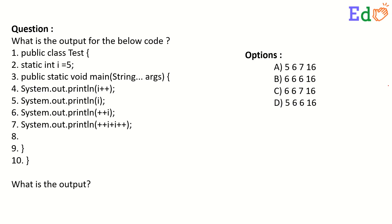What is the output of the following code snippet? If you see here, i is having a value 5. Now here system.out.println we are doing i++. That means it is post increment. So the value will remain 5.